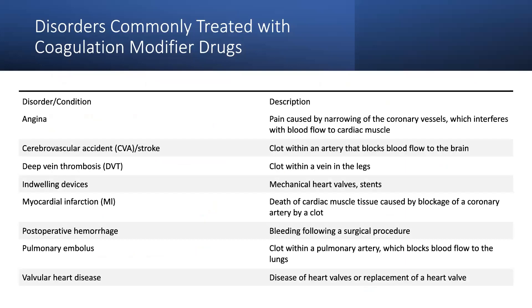These disorders are commonly treated with coagulation modifier drugs. Angina — pain caused by narrowing of coronary vessels interfering with blood flow to cardiac muscles — can be treated with these drugs. In a cerebrovascular accident (CVA/stroke), a clot within an artery blocks blood flow to the brain. In deep vein thrombosis (DVT), a clot forms within a vein in the legs. Myocardial infarction involves death of cardiac muscle tissue caused by blockage of a coronary artery by a clot.